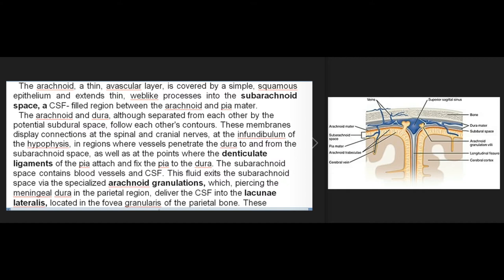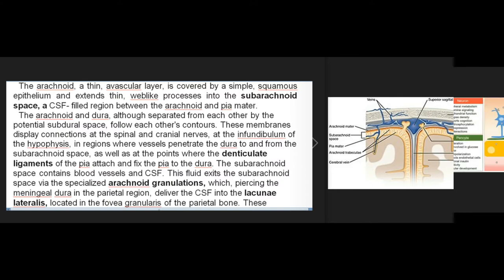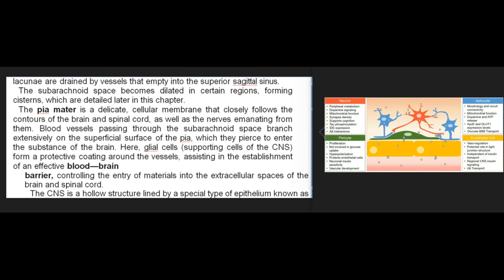The subarachnoid space contains blood vessels and CSF. This fluid exits the subarachnoid space via specialized arachnoid granulations, which pierce the meningeal dura in the parietal region and deliver CSF into the lacunae laterales located in the fovea granularis of the parietal bone. These lacunae are drained by vessels that empty into the superior sagittal sinus. The subarachnoid space becomes dilated in certain regions, forming cisterns.